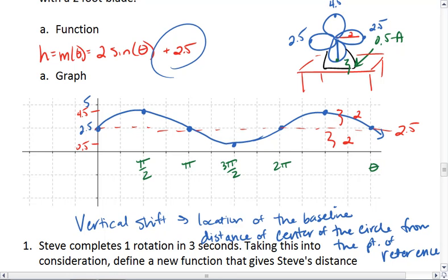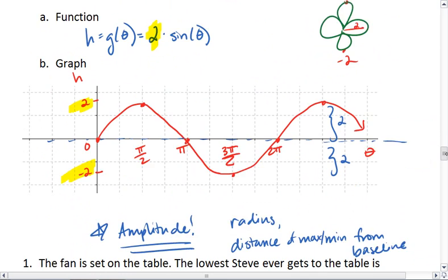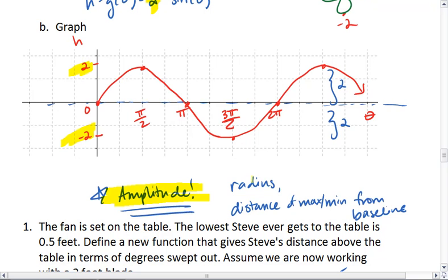Another important characteristic to note: so far we've talked about vertical shift, which is the location of the baseline or the distance of the center of our circle from our point of reference. And we've talked about amplitude, which is the radius of our circle—the distance of our max and min points from that baseline.